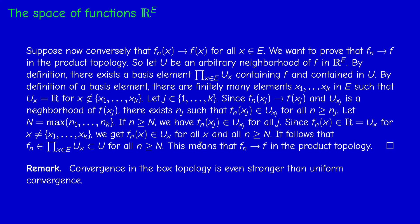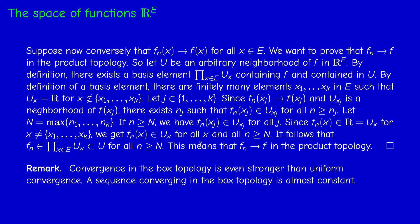What about convergence in the box topology? Convergence in the box topology is even stronger — one can conjecture it is something like uniform convergence, but actually it is stronger: a sequence converging in the box topology is in some sense almost constant. So convergence in the box topology is very restrictive. This is the third reason why we prefer the product topology over the box topology.